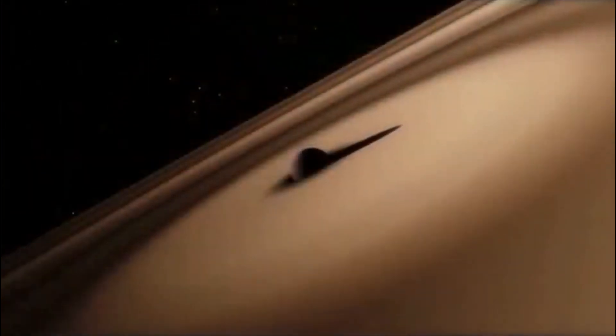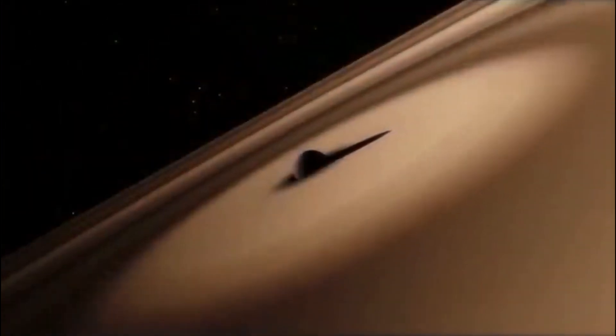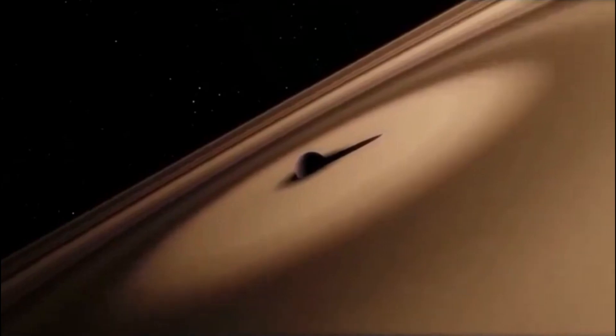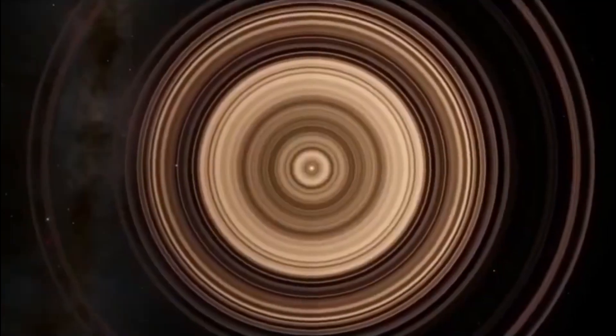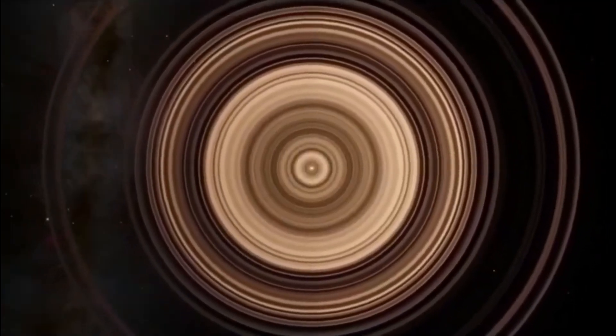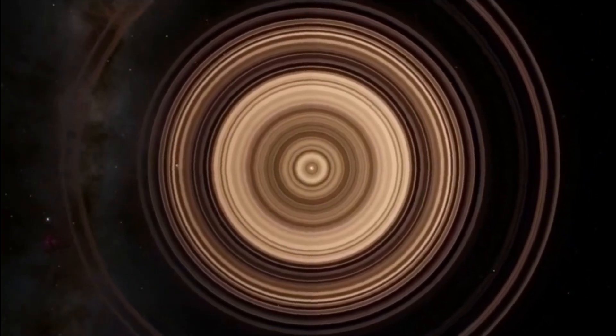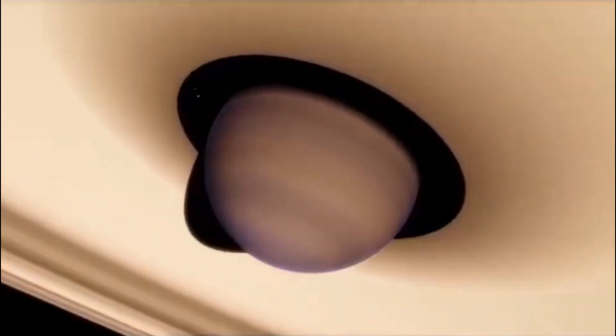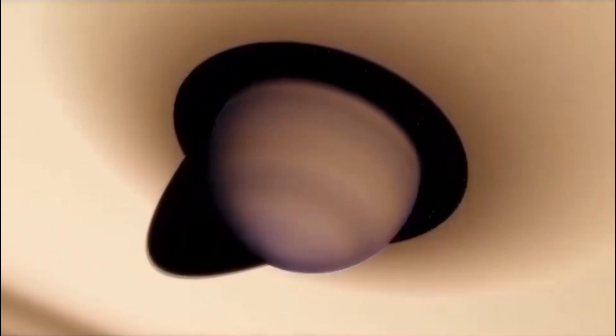Super Saturn is estimated to be about 20 times larger than Jupiter, the largest planet in our solar system. Its ring system is also much larger than Saturn's and more complex. The rings of Super Saturn span over 120 million kilometers, and there are gaps in the rings which are believed to be caused by the presence of moons.